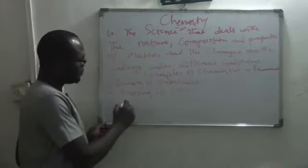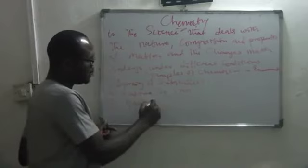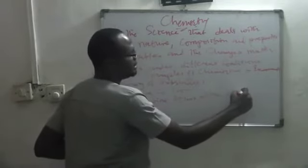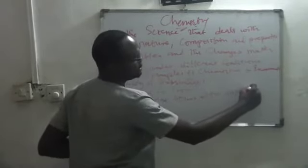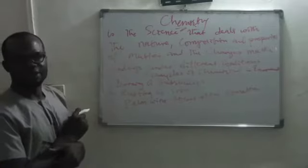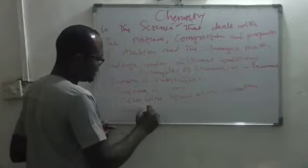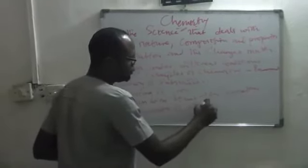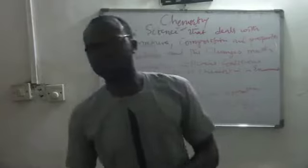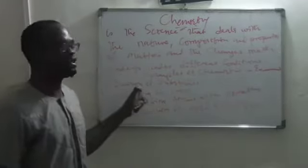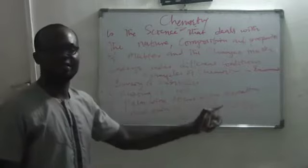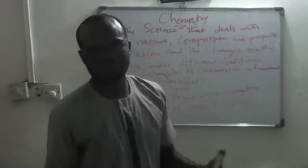Number three, palm wine souring after some time — can you explain that using chemistry? Yes. Number four, production of fertilizers — that is chemistry. Production of food — even food production uses chemistry. So all these can be explained using chemistry: burning of substances, rusting of iron, palm wine souring after some time, and production of food substances.